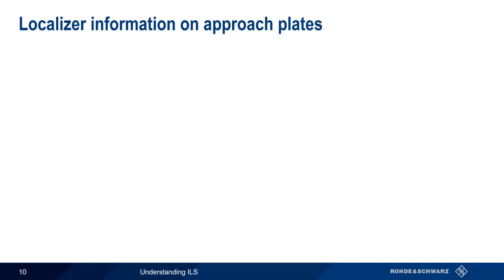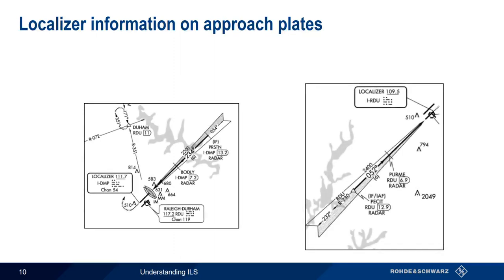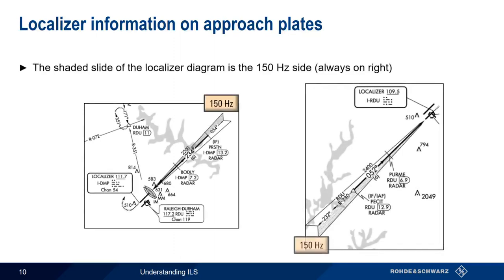Localizer frequency information is also displayed on the approach plates used by pilots. The shaded side of the localizer represents the 150 Hz side, which is always on the right, and the unshaded side is the 90 Hz side.